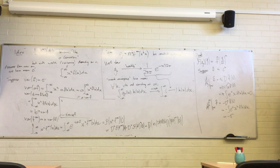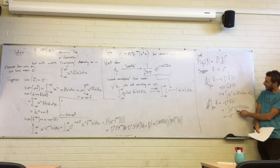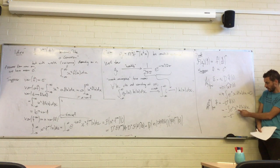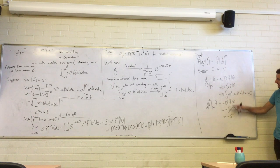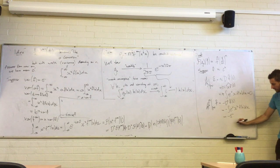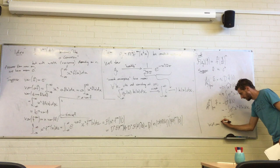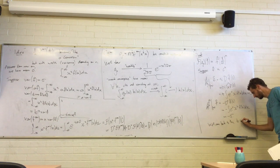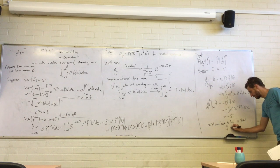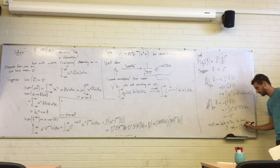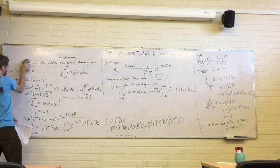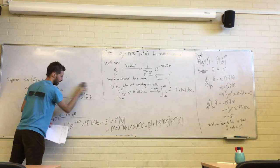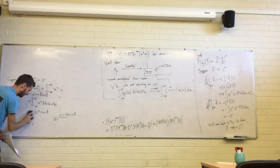Basically the idea is that if you have some function with finite variance, assuming we're really allowed to do these steps, then f-hat is C², the first derivative is 0, and the second derivative is minus sigma². We'll come back to show f-hat really is C² — we're cheating at this point by assuming it.